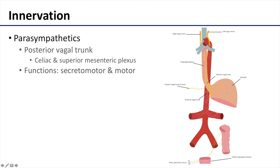The parasympathetics to the duodenum come from the posterior vagal trunk. That posterior vagal trunk flows to and through the celiac ganglion without synapsing, and then distributes through the celiac and superior mesenteric plexus. When active, the parasympathetics encourage both secretomotor function of the gut as well as gut motility.